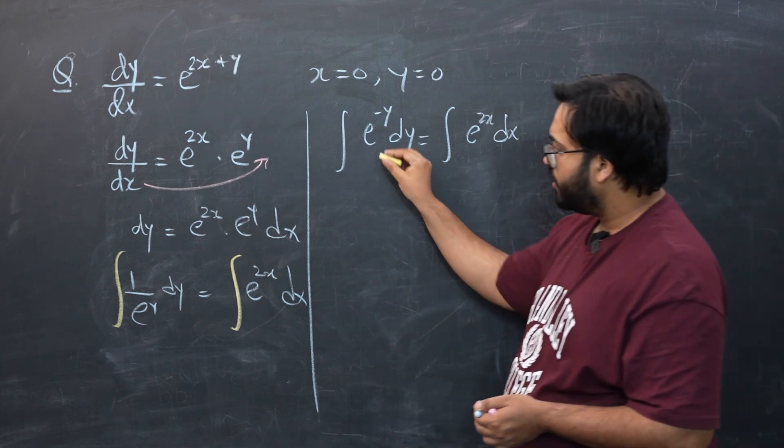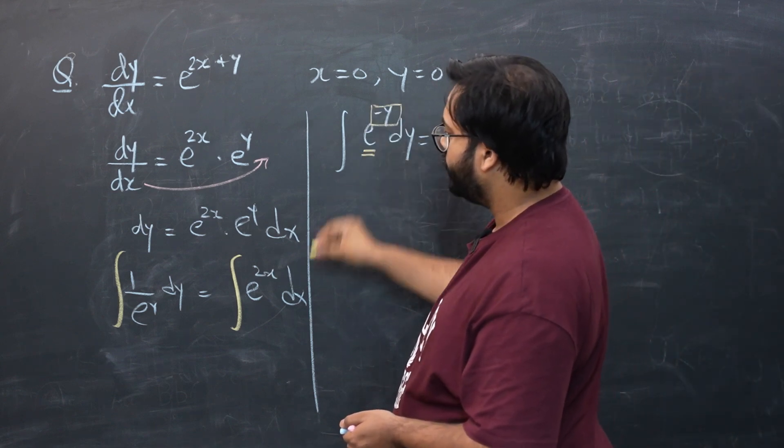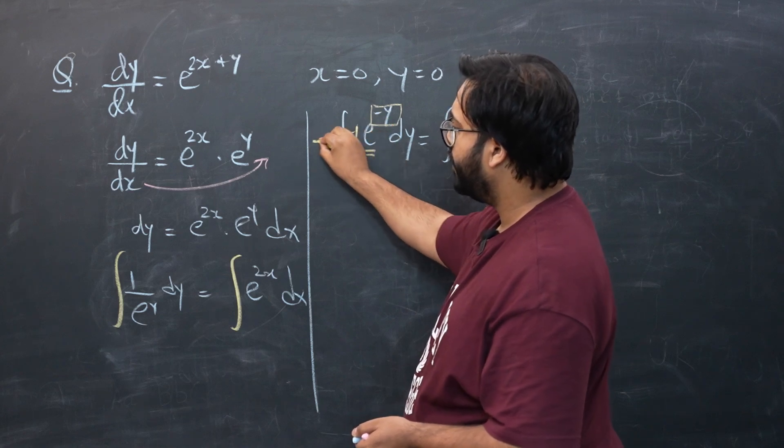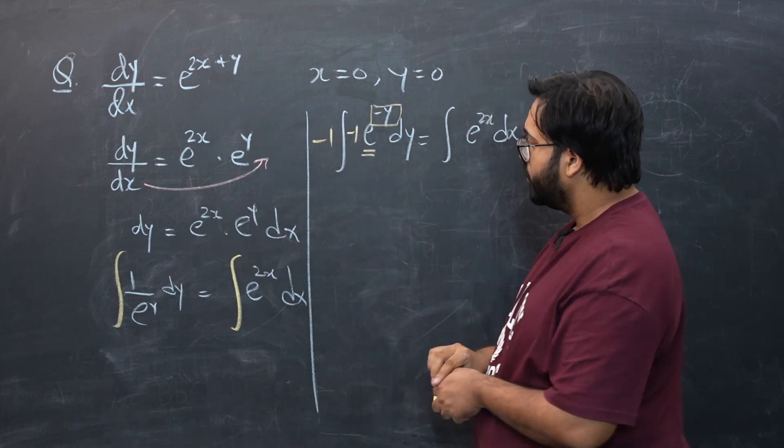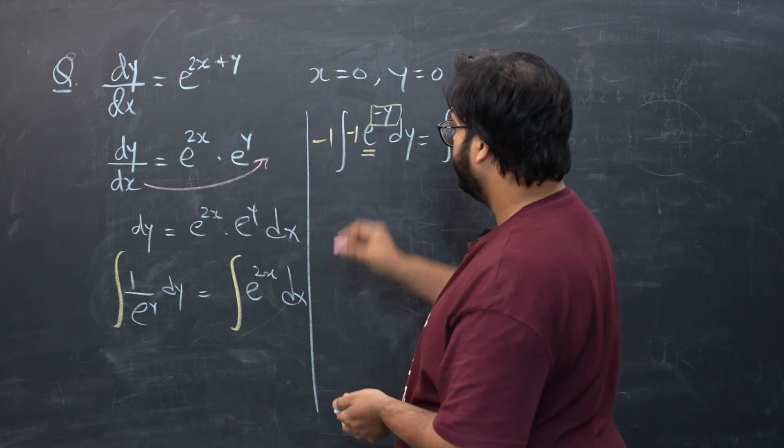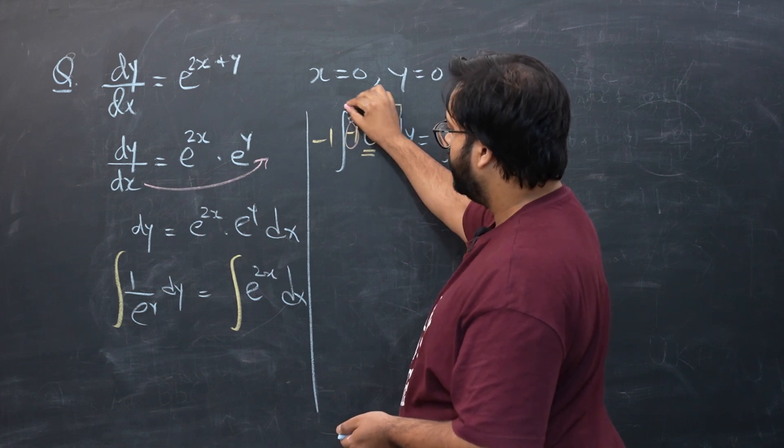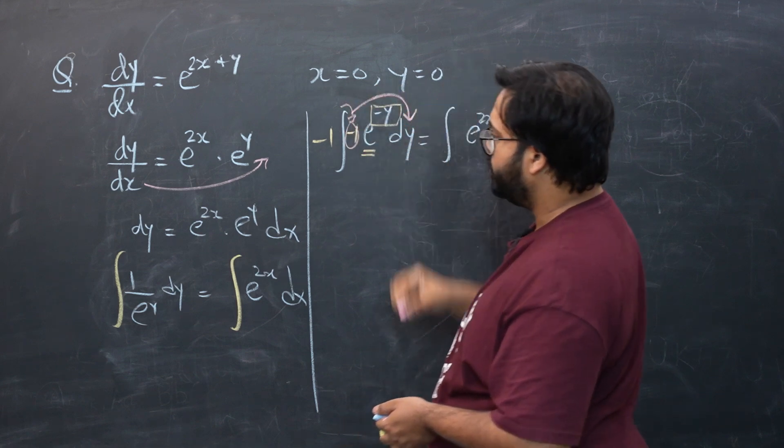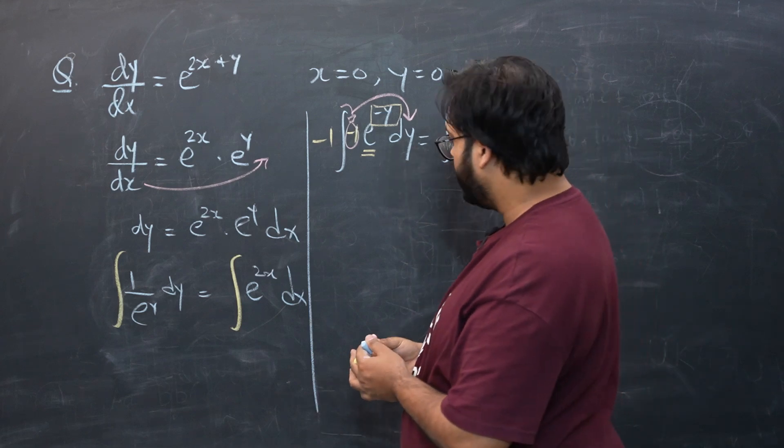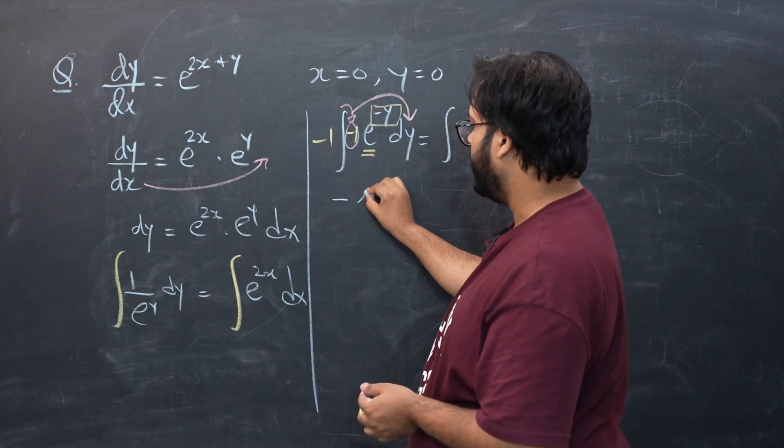So let's start integrating. For this e, the box is minus y, I need negative 1 over here, I will need negative 1 outside, so three things are going to disappear. So differentiation of box and these three things will disappear and I will get integration as negative e raised to power minus y.